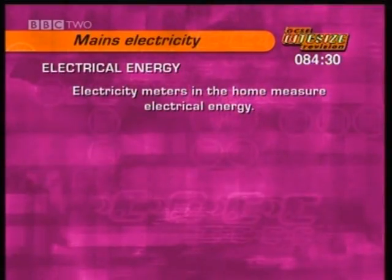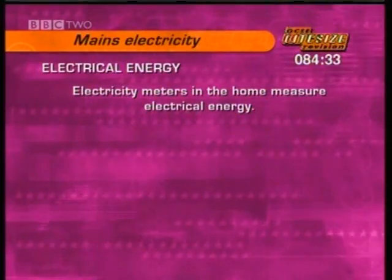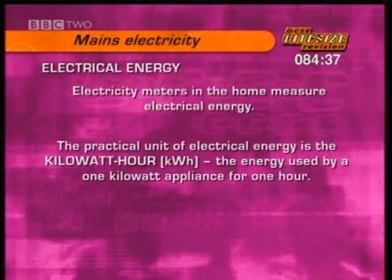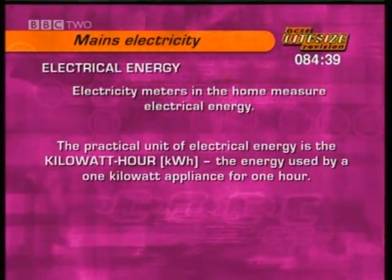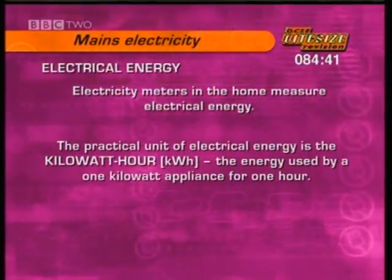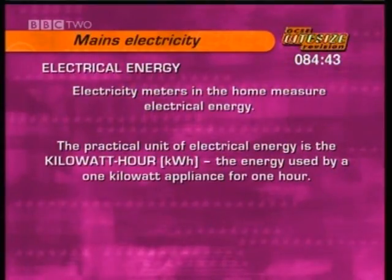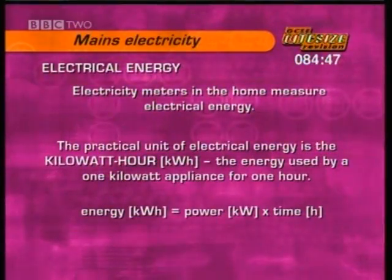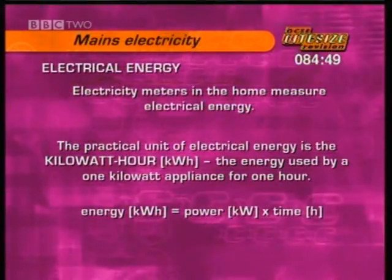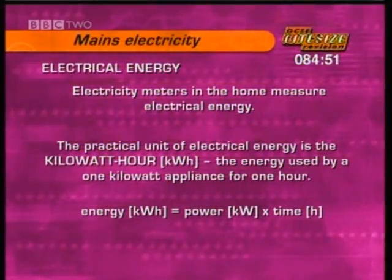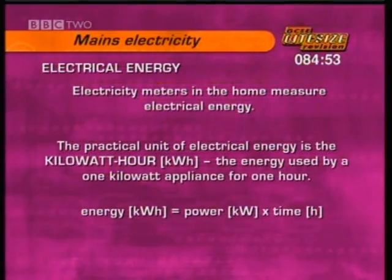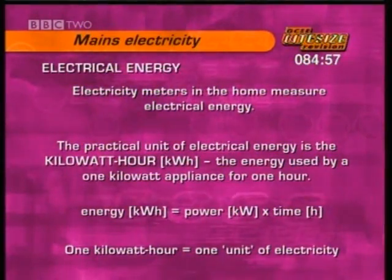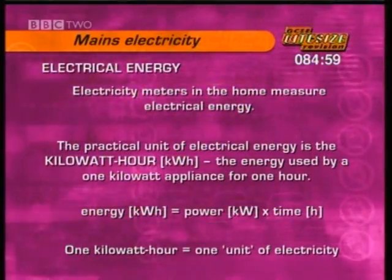Your home electricity meter measures the amount of electrical energy used to work out your electricity bill. Because joules are so small, a more practical measure of electrical energy is kilowatt hours — that's the energy used by a one-kilowatt appliance for one hour. So the energy formula becomes: energy in kilowatt hours equals power in kilowatts times the time in hours. One kilowatt hour is the same as one unit of electricity we pay for.